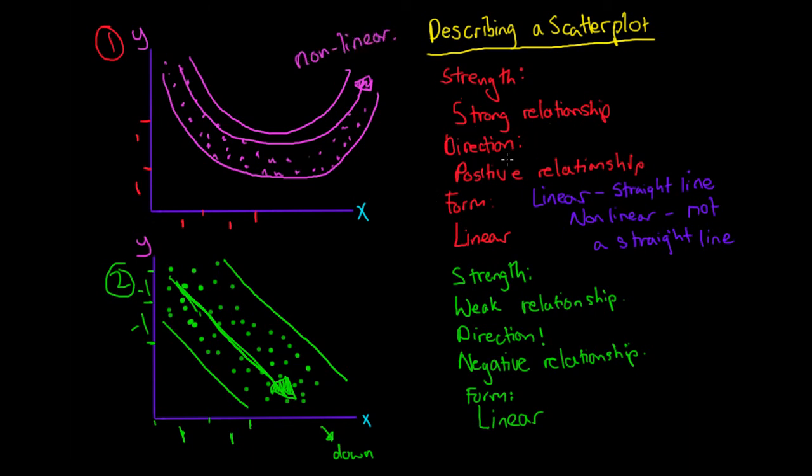But our original curves were described as strong relationship, positive relationship, linear for number 1, and a weak, negative, linear relationship for number 2. So that's how we describe scatter plots.